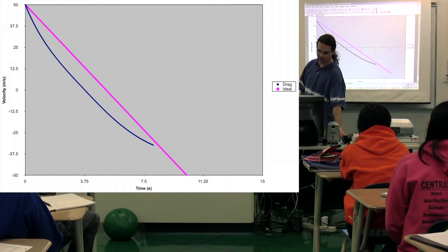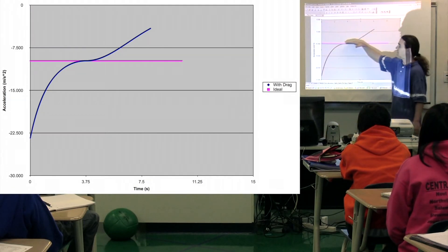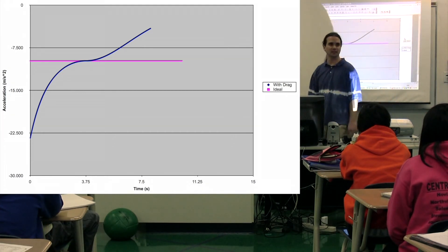And lastly, the acceleration as a function of time. Well, it should just be a horizontal line at negative 9.8 for the ideal case. But it's very, very different for the non-ideal case.